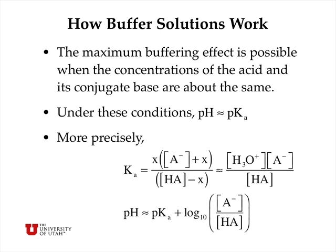The maximum buffering effect is possible when concentrations of the acid and its conjugate base are about the same. That way you can buffer either against the unexpected addition of small amounts of strong acid or strong base. Under these conditions, the pH is approximately equal to the pKa.